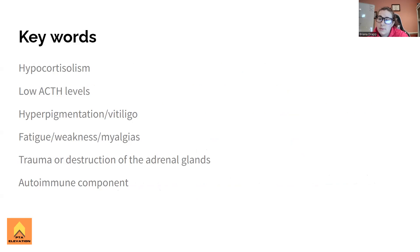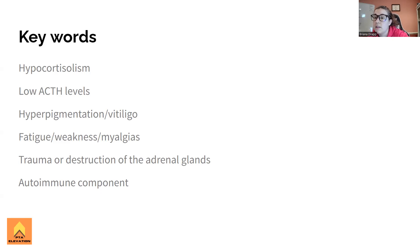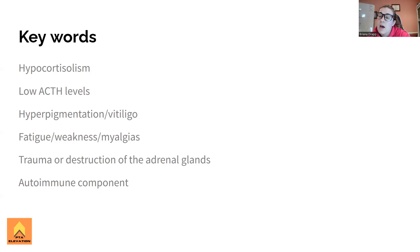Key words: hypocortisolism - hypo means low. Low ACTH levels - adrenal corticotropic hormone coming from the pituitary gland; if that's low, the adrenal gland output will be low. Any sort of hyperpigmentation or vitiligo should be leaning towards Addison's disease. Fatigue, weakness, and myalgias are keywords pointing towards cortisol levels being affected. Any sort of trauma or destruction of the adrenal glands is basically the bread and butter of Addison's disease. It has an autoimmune component. I'd also add weight loss to this - you're less likely to see weight gain and more likely to see weight loss.